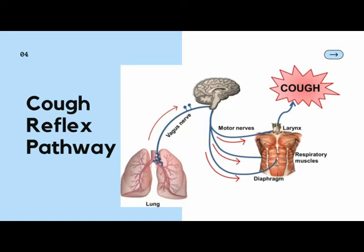Afferent impulses from these cough receptors reach the cough center, which lies in the medulla oblongata, part of the brain. From the cough center in the medulla oblongata, efferent or motor impulses travel via parasympathetic and motor nerves to the diaphragm, the intercostal muscles, and abdominal muscles. Increased contraction of these muscles results in noisy expiration, which is called cough.